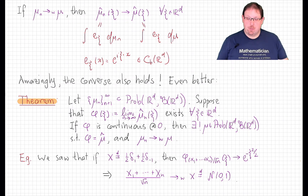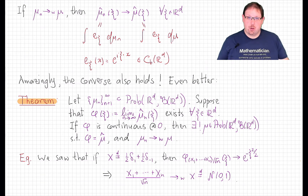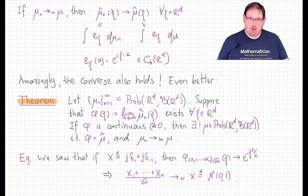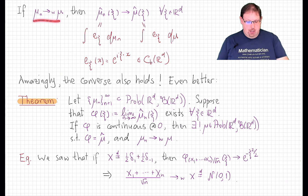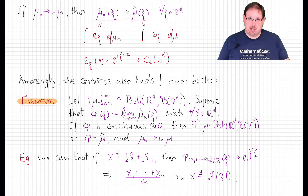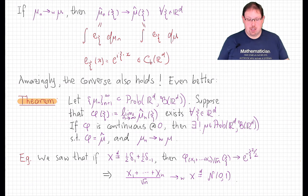Recall the Portmanteau theorem, which gave us a whole host of other equivalent conditions to weak convergence. We're about to add one more to the list, because this implication — that weak convergence implies pointwise convergence of characteristic functions — is true in the converse as well. In fact, an even stronger statement is true.